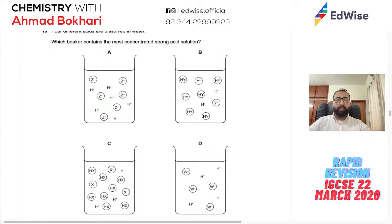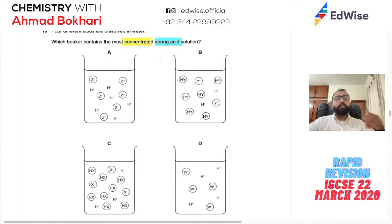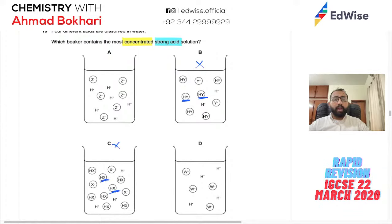Question 19: Four acids are shown. A strong acid fully ionizes — no acid molecules remain, only ions. A concentrated acid has more H⁺ ions. The correct answer shows only ions with no acid molecules — that's the one that is both strong and concentrated. Answer: C.